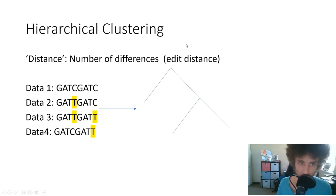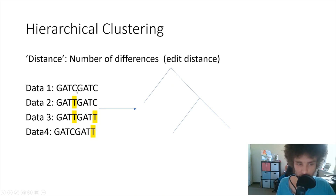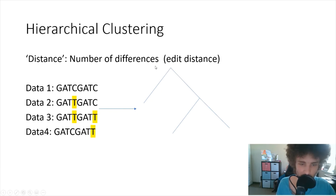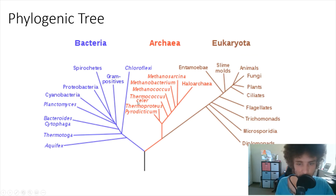Another way to look at distance is edit distance. Given some reference string, you ask: what's the number of changes I need to make to this DNA string to get to the original string? You can then say the least common ancestor probably has the least number of edits to all the subclasses. This is used to construct phylogenetic trees, and remember that in hierarchical clustering all points end up in their own class — these are common ways clustering algorithms have been applied.